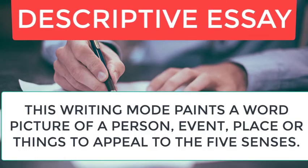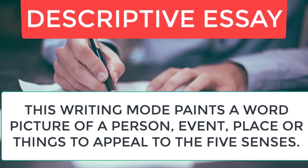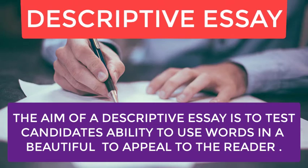Next is descriptive AC. A descriptive AC is a writing mode in which a writer paints a word picture of a person, event, place, or anything to appeal to the five senses. Descriptive AC appeals to the senses of touch, sight, hearing, smell, and taste. The aim is to test candidates' ability to use words beautifully to help the reader visualize the person, place, event, or things being described through sensory impressions.